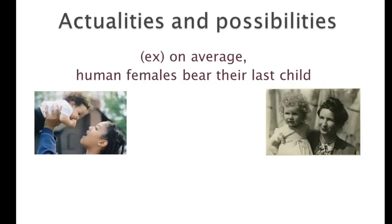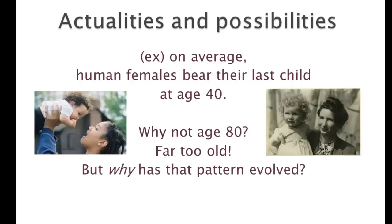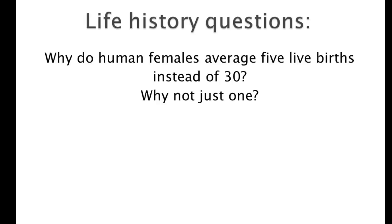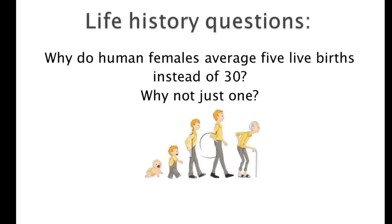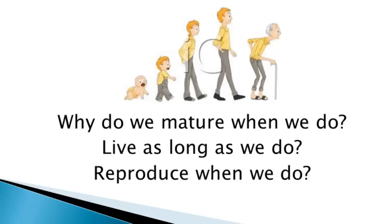At the other end of the spectrum, on average human females bear their last child in non-contraceptive traditional populations around age 40. We could pose a similar hypothetical: why hasn't evolution shaped humans so that women bear their last child at age 80? Again we say that's far too old, but the question is why. Why has this pattern evolved where there's about two decades of reproductive years in traditional populations? Life history questions ask, for example, why human females average five live births over those 20 years — why not 30? Why do pregnancies last nine months? This is all about why we mature when we do, why we live as long as we do, and why we reproduce when we do.